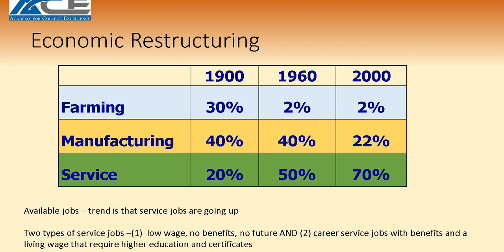Let's look at what type of economy we've had across the decades. At the turn of the century in 1900, farming accounted for 30% of the economy, manufacturing accounted for 40%, and service professions accounted for 20%. Moving into the year 2000 and now 2020, farming only accounts for 2%, manufacturing has decreased to 22%, while service industries have increased to 70% of the economy.